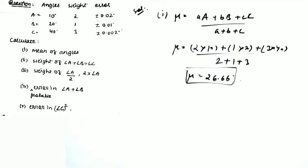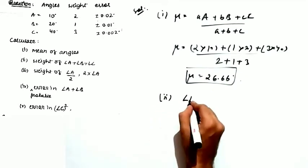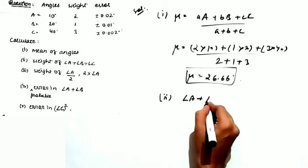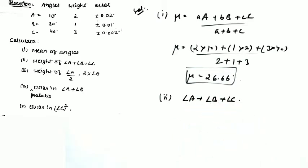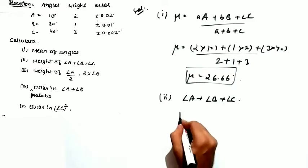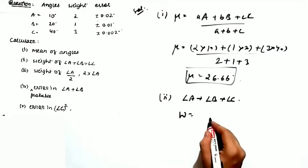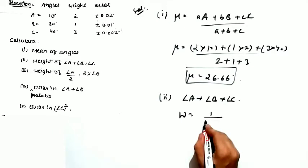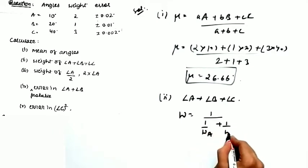The second part asks for the weight of the sum angle A + angle B + angle C. In the topic of weights, the weight of the sum of quantities is calculated using a specific formula involving the reciprocal of the sum of reciprocals of the individual weights.